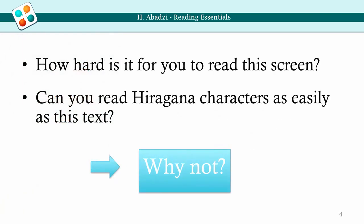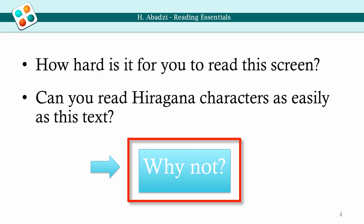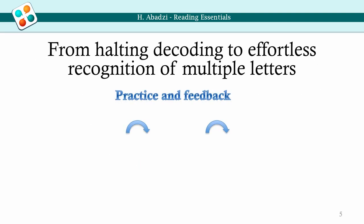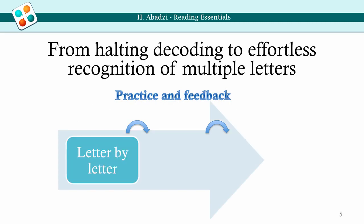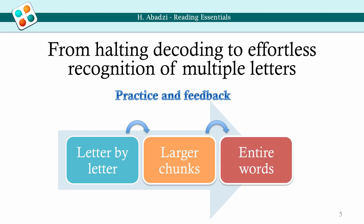How hard is it for you to read this screen? Can you read Hiragana characters as easily as this text? Why not? All humans use the same circuitry to read. Early on, beginner's reading is halting — it is a letter-by-letter conscious search for corresponding sounds. As students practice, new nerve endings develop in their brains. Like electrical wiring, the nerves connect visual and verbal regions, speeding up transmission. With further practice, people progress to recognition of multiple letters and entire words simultaneously.